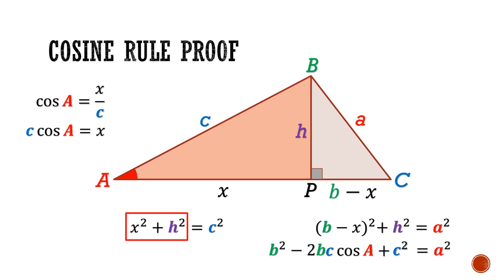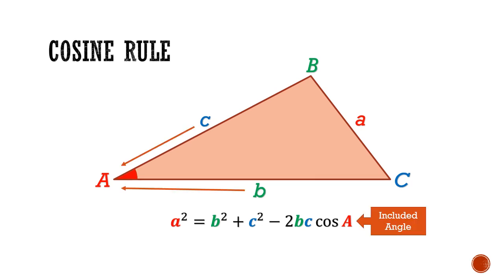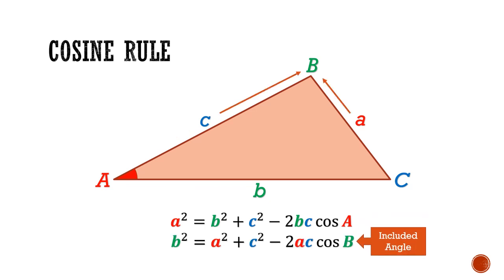Now let's return to the original triangle that we started off with. By rearranging the terms in this equation, we are now able to derive the cosine rule. The cosine rule states that a² = b² + c² - 2bc cos A, where A is the included angle between side b and side c. Alternatively, I can make b² the subject and that will be equal to a² + c² - 2ac cos B, where B is the included angle between side a and side c.